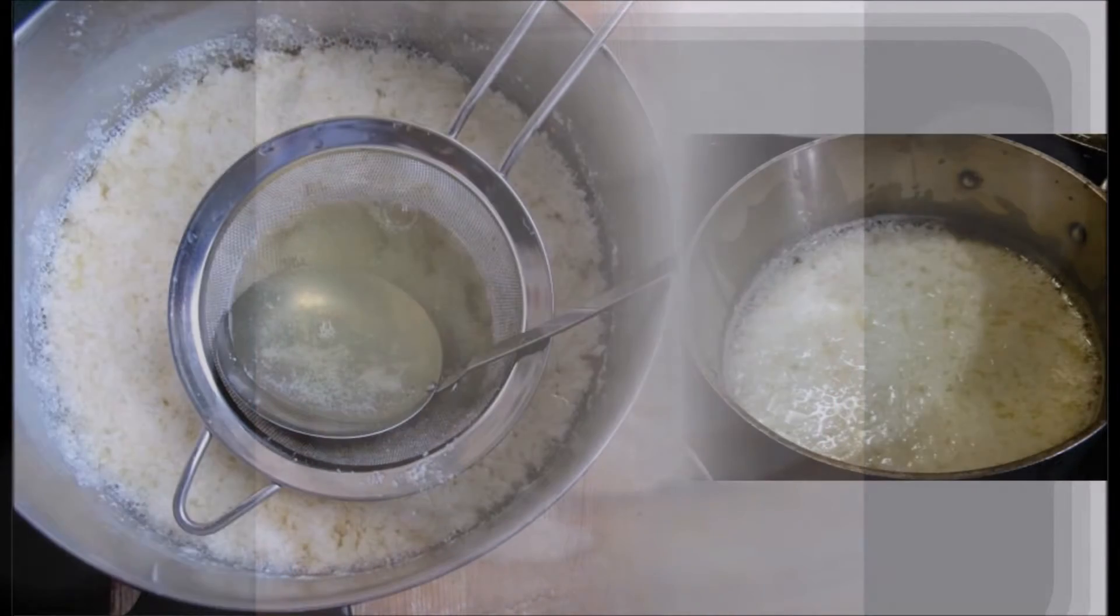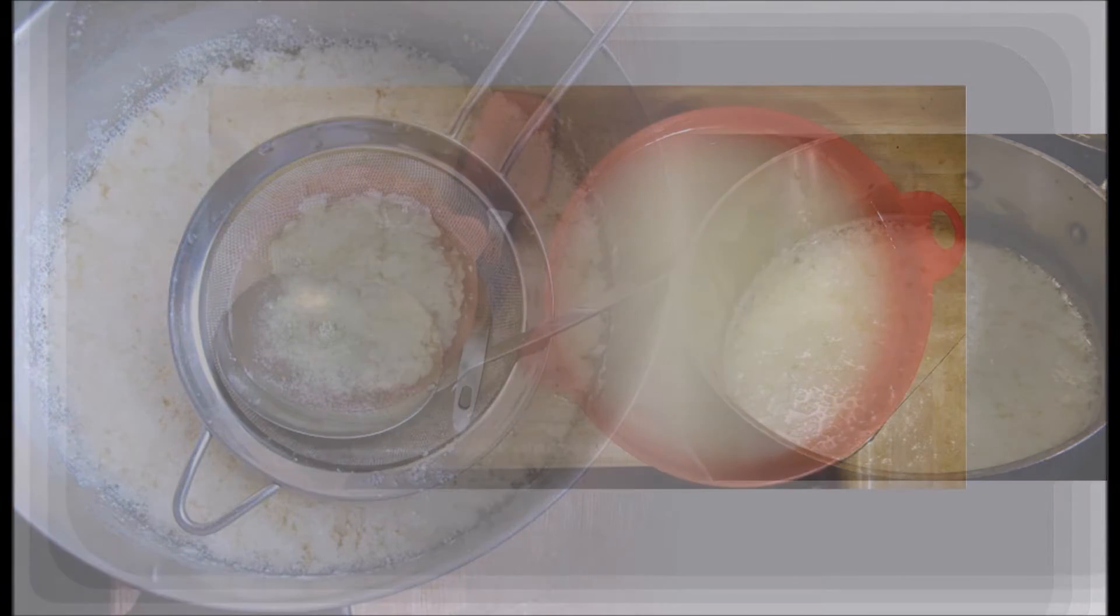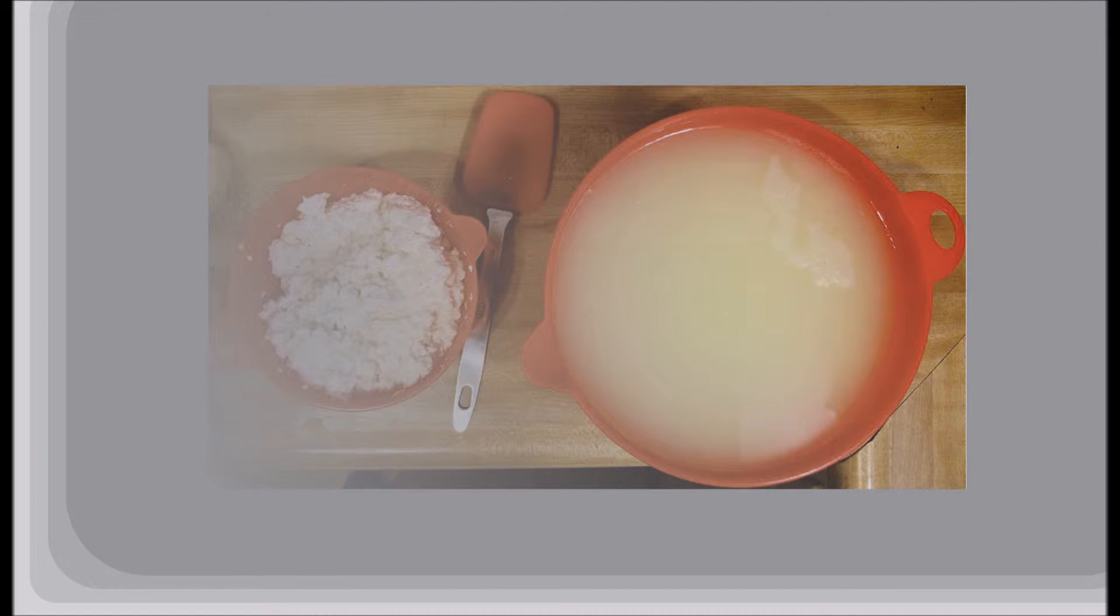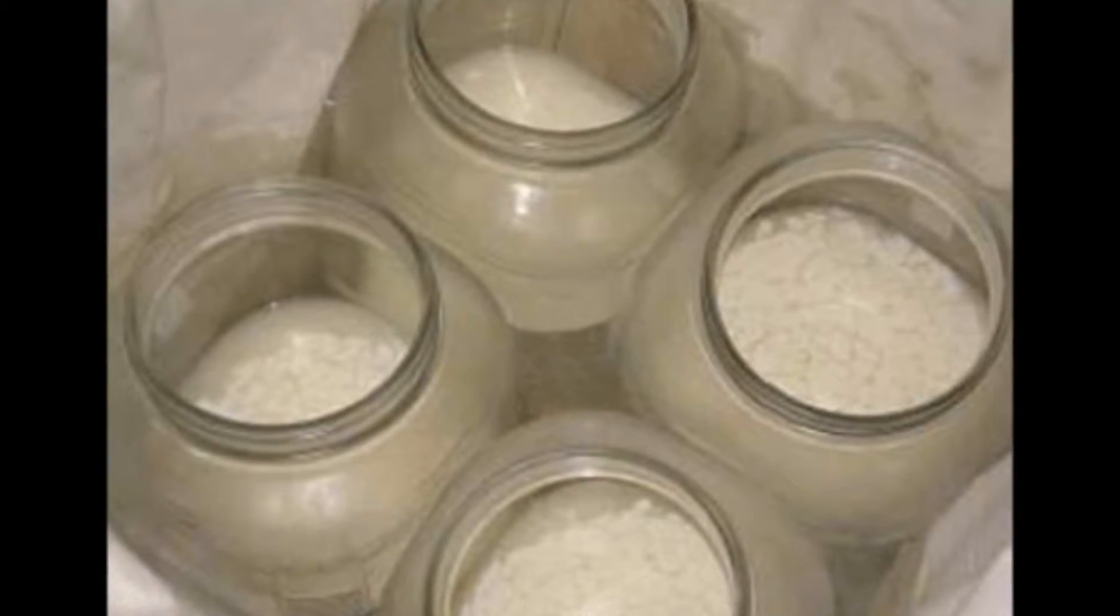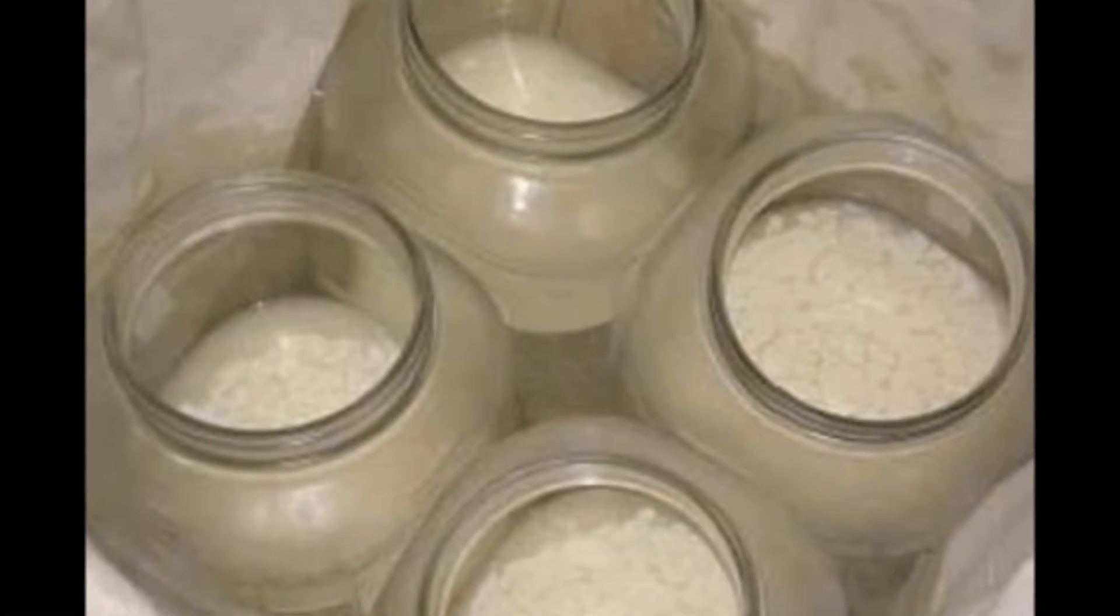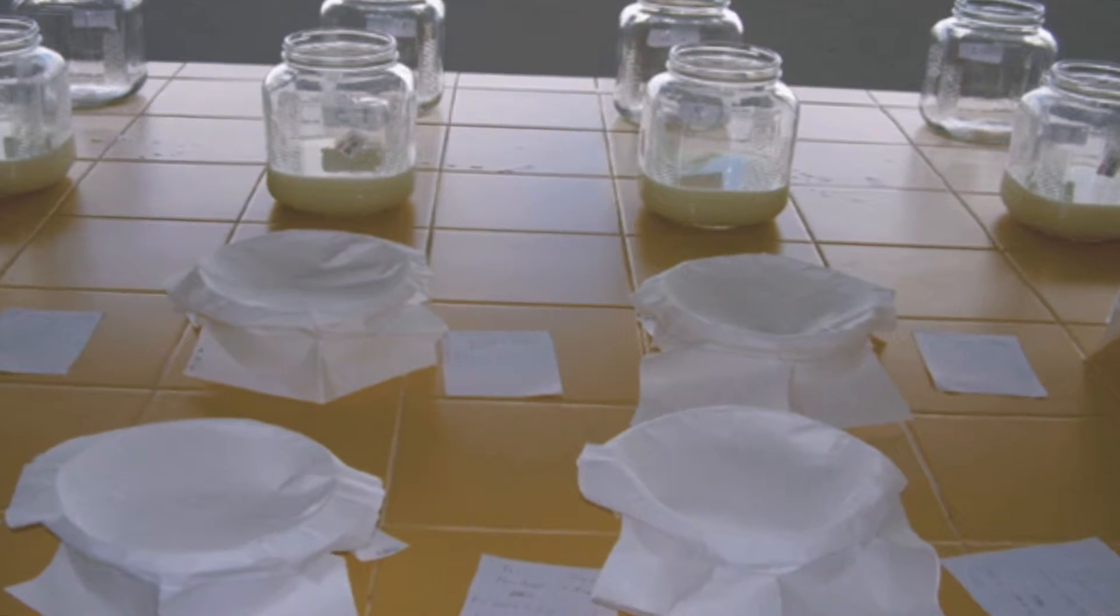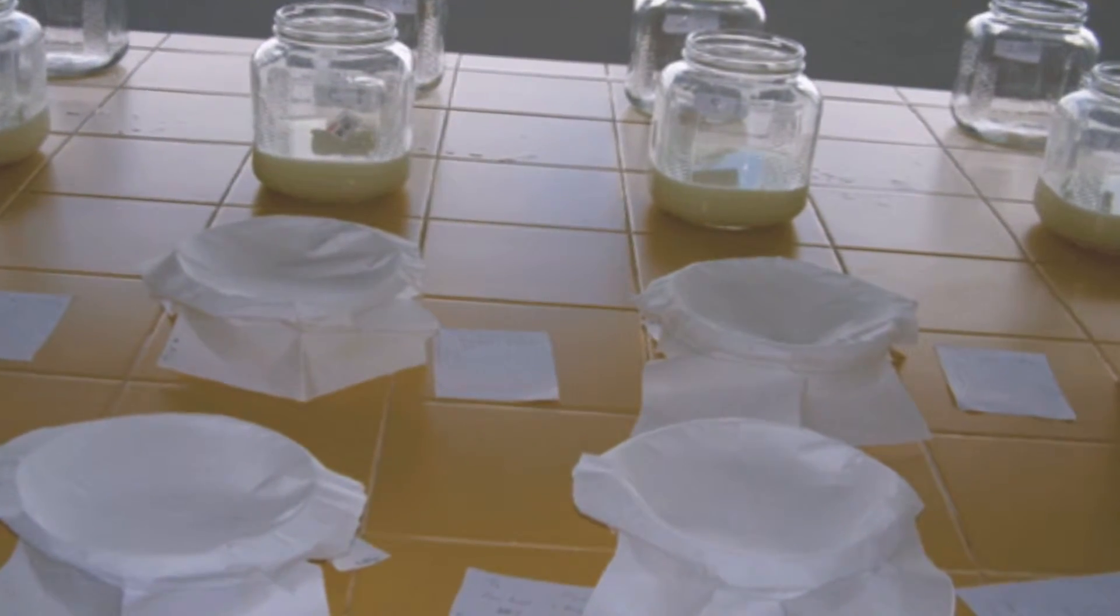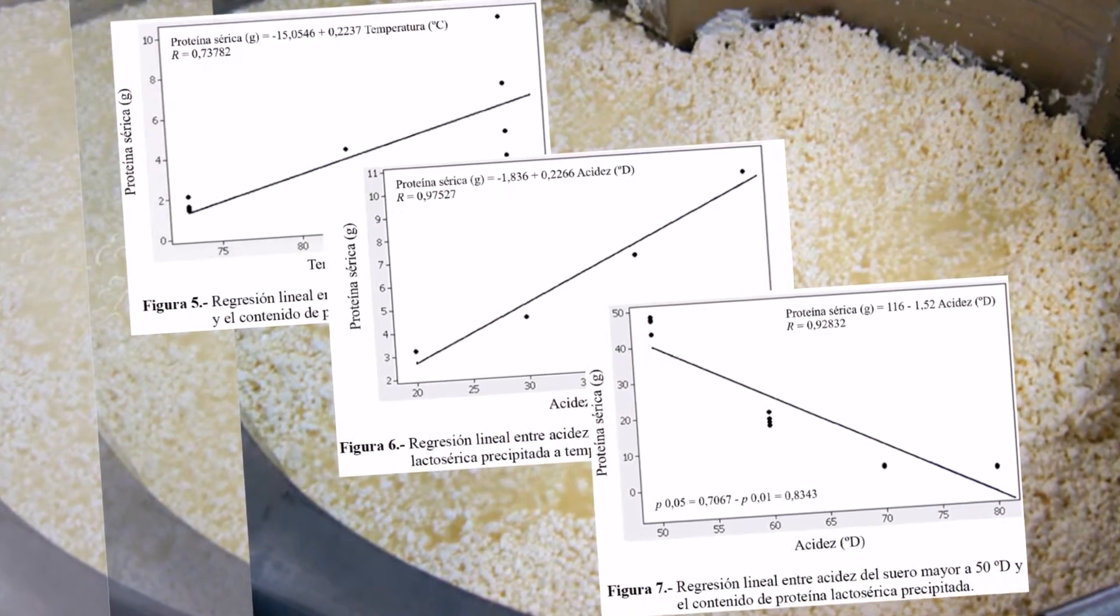Under acidic condition of 50 Dornic degrees, 93 degrees Celsius temperature and action time of 30 to 40 minutes, higher protein content were obtained, drained and pressed at 48.47 and 49.2 grams per liter respectively. The results are an alternative of adjusting the condition of acidity, temperature and time. Controlled denaturation offered to producers to increase production performance with ricotta and they can be profitable.